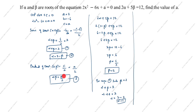We will substitute these values into the third equation to get the value of a. Alpha is 1 and beta is 2, and alpha times beta equals a by 2. So 1 times 2 equals a by 2, giving 2 equals a by 2. Cross-multiplying: 4 equals a. Therefore the value of a is 4.